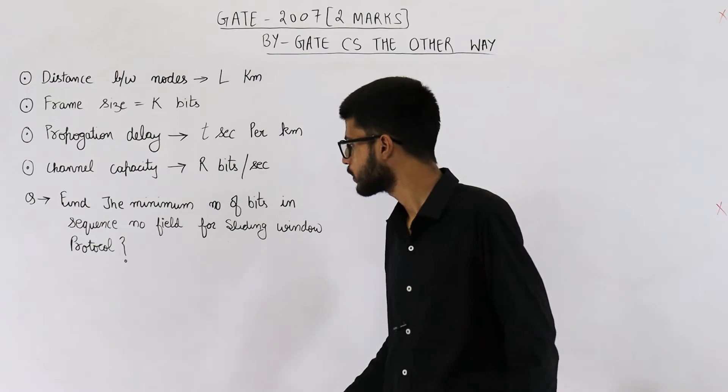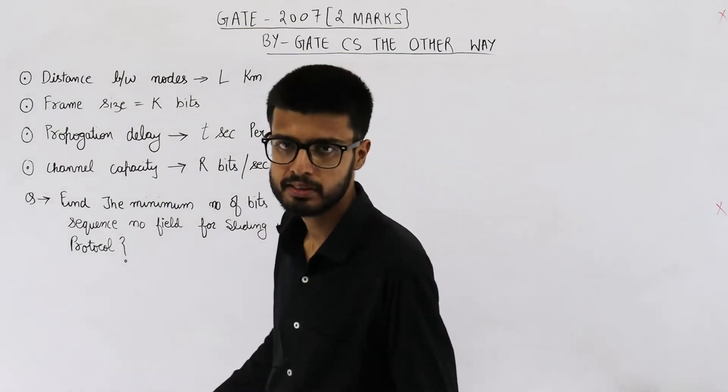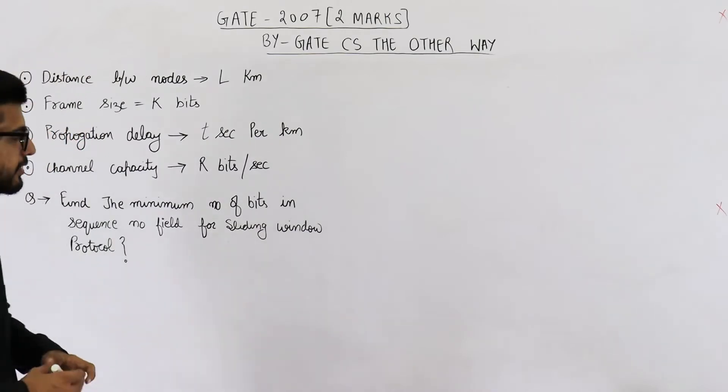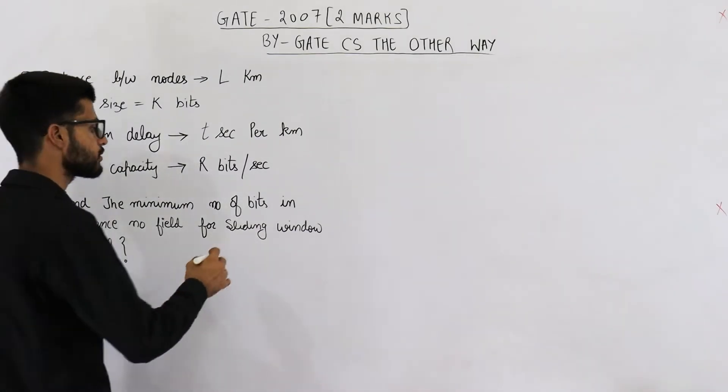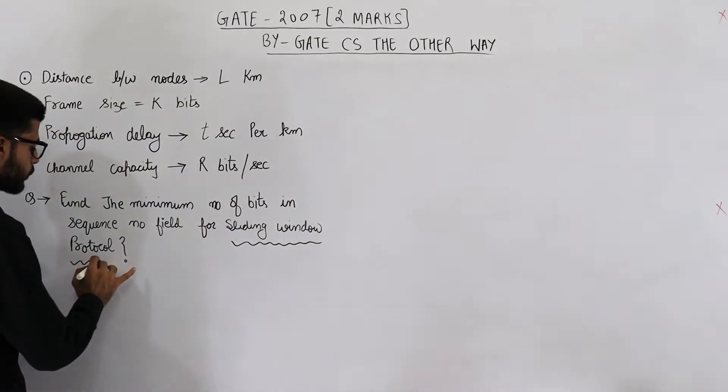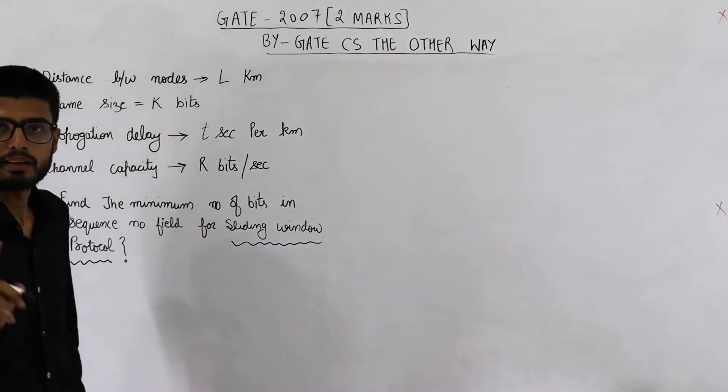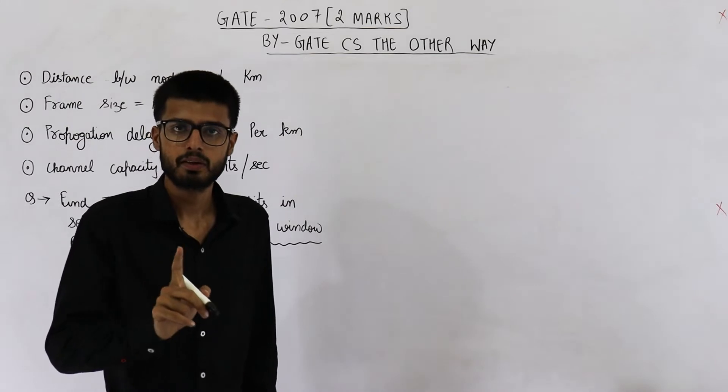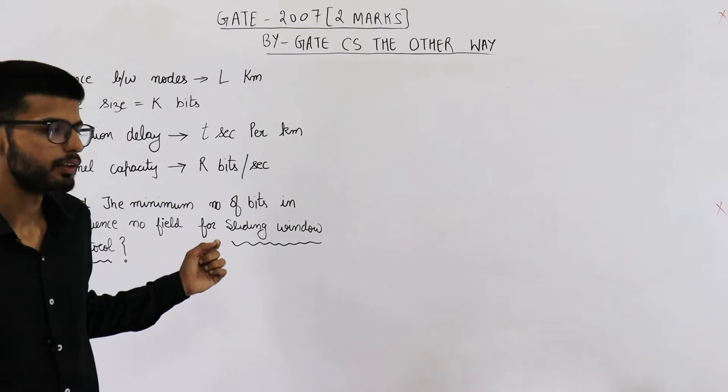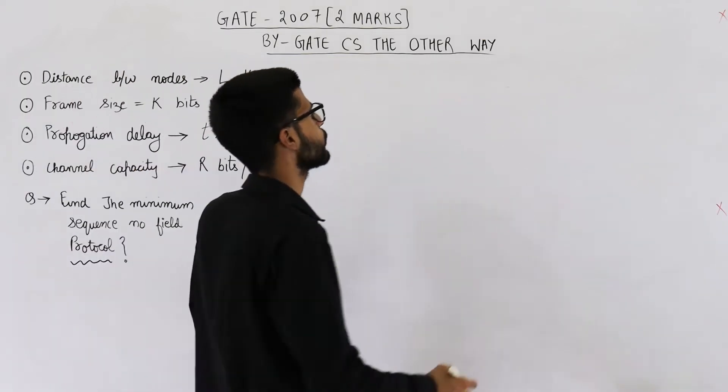So we need to determine the minimum number of bits in sequence number field. Now listen carefully. This point is discussed wrongly in many books and on many websites. They are asking about sliding window protocol. They haven't mentioned go-back-N or selective repeat protocol specifically. This is the general sliding window protocol.